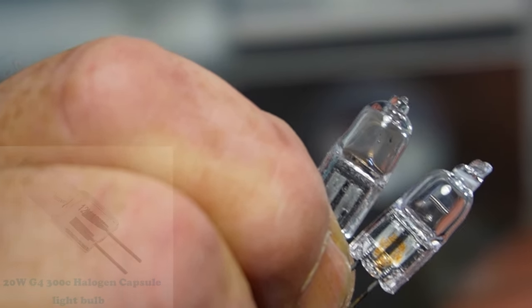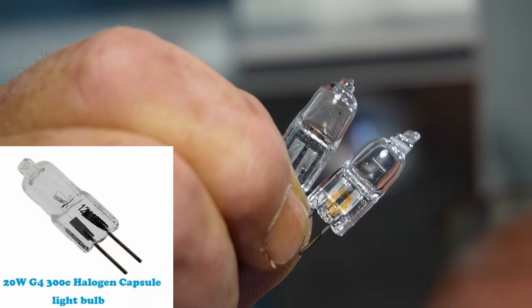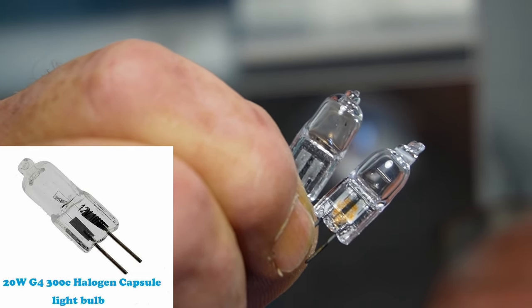If you look closely at the bulb on this side you can see the filament has come away from the actual bulb itself. The one on this side is actually the new bulb.